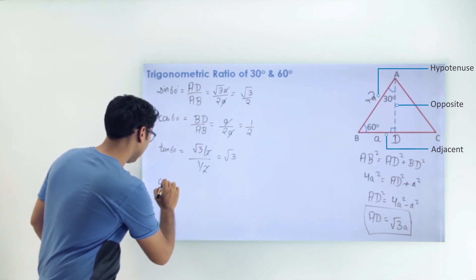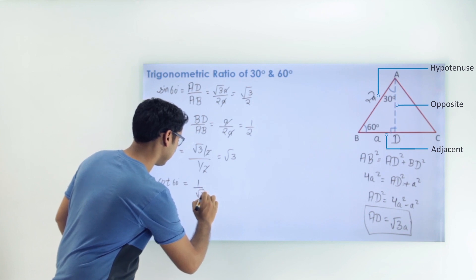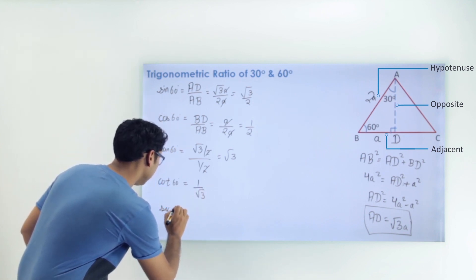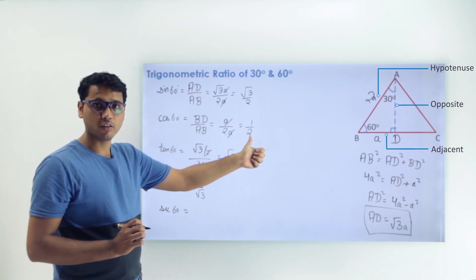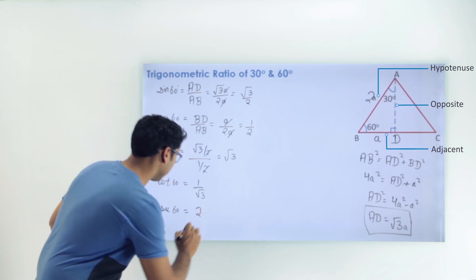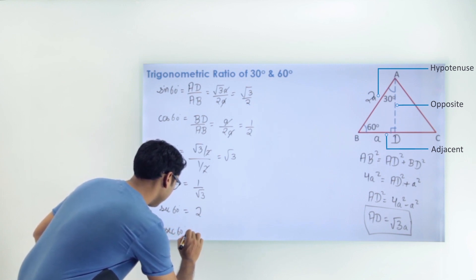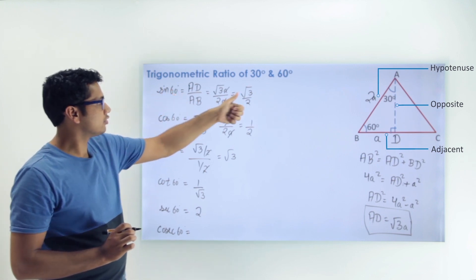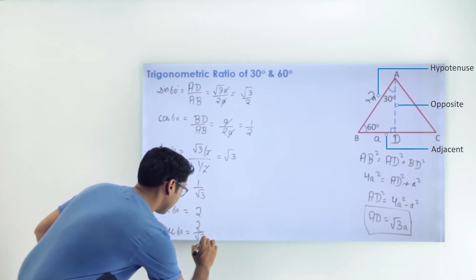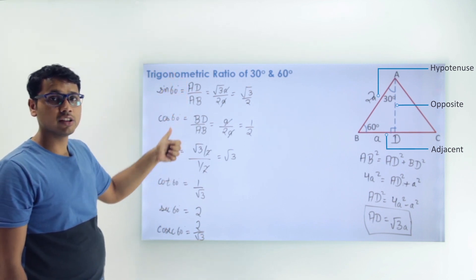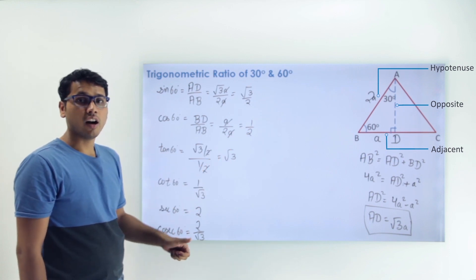cot 60° is the reciprocal of tan 60°, so cot 60° = 1/√3. sec 60° is the reciprocal of cos 60°, so sec 60° = reciprocal of 1/2 = 2. This completes all trigonometric ratio values for angle 60°, and you can verify they match the standard table.